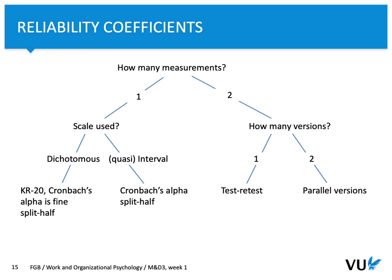This graph indicates what kind of reliability coefficient to calculate depending on the measurement or scale used. First, take into account how many measurements were done. If only one measurement is possible, look at the left part of the graph. Another aspect is what kind of scale was used. A scale can be dichotomous — 0 or 1, yes or no — or quasi-interval, such as a Likert scale. If you have a dichotomous scale where one response is incorrect and one is correct, you would use KR-20.